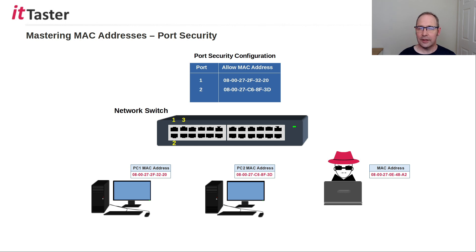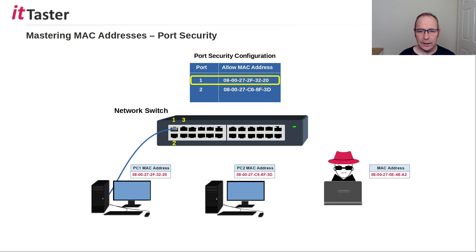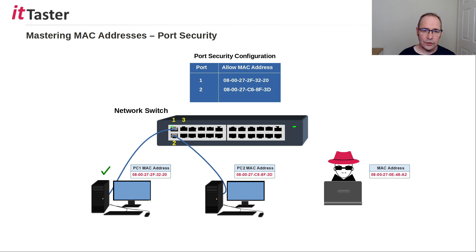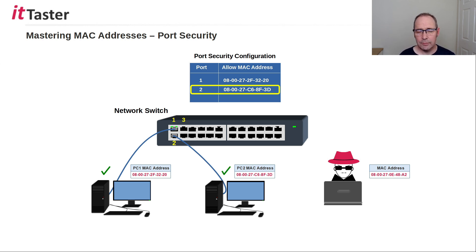Port security is a very important feature. A port can be manually configured for a specific MAC address, or the switch can be configured to dynamically learn the MAC addresses of devices connected to each port. In this example, port security is enabled and manually configured. When PC1 is connected, the switch checks PC1's source MAC address against its configuration for port 1 — PC1's MAC address matches and it's permitted to connect. When PC2 is connected, the switch checks PC2's source MAC address against its configuration for port 2 — PC2's MAC address matches and it too is permitted to connect.